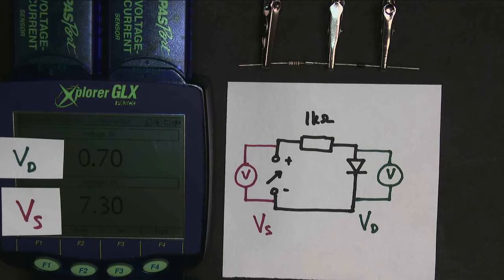And even if I go right up to 8 or 9 volts, the voltage across the diode doesn't really rise much above 0.7 volts. Why is this?